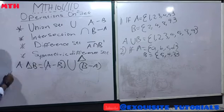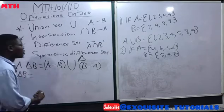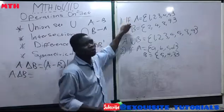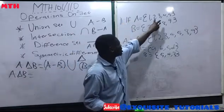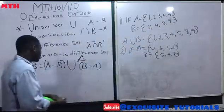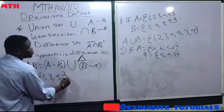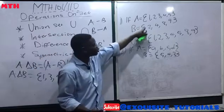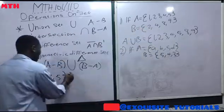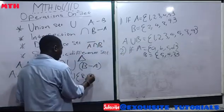Let's find the symmetric difference of A and B from question one, where A = {1, 2, 3, 4, 5} and B = {2, 4, 8, 9}. A − B gives us elements in A but not in B: 1, 3, and 5. Then we add elements in B but not in A: 8 and 9. So A △ B = {1, 3, 5, 8, 9}.